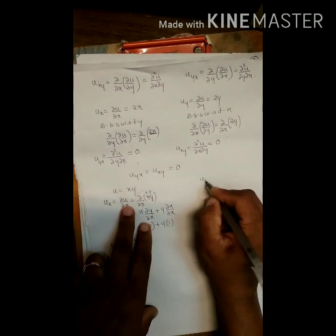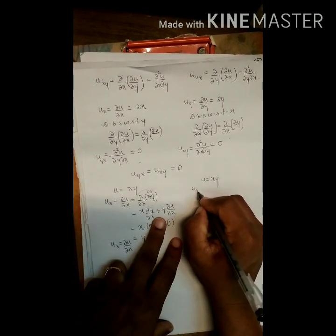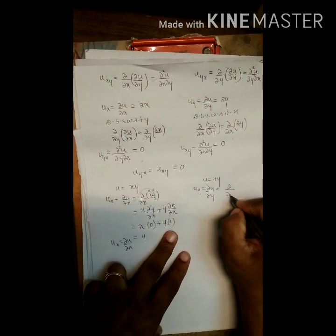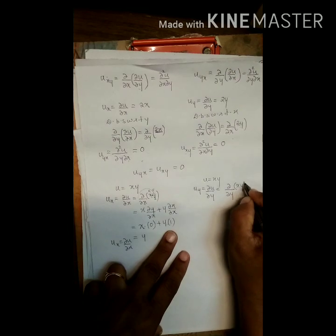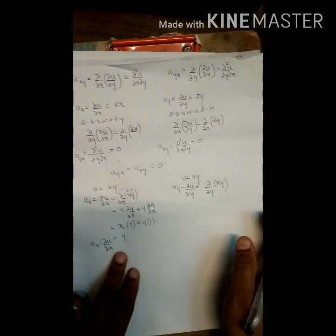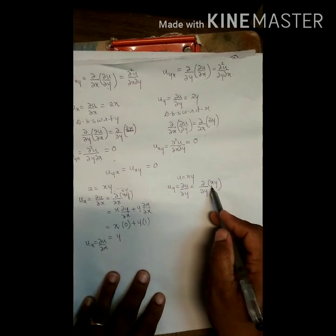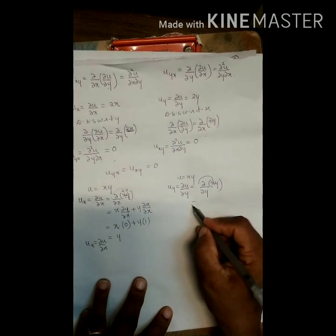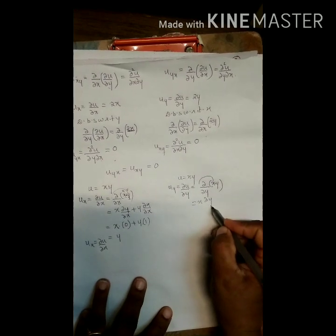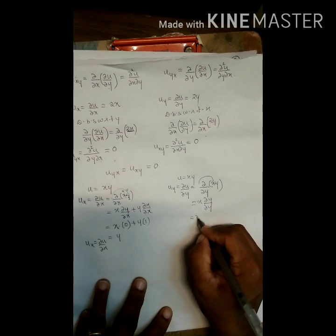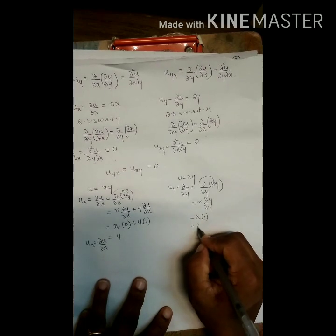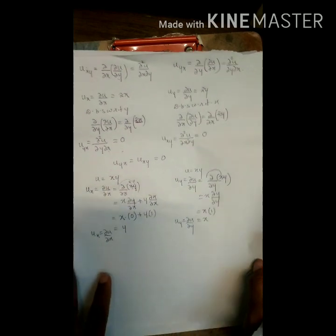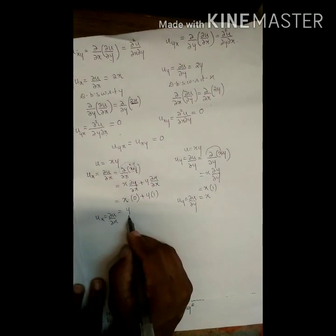Similarly, differentiating u = xy with respect to y: u_y = ∂u/∂y = ∂/∂y of xy. Now differentiating partially with respect to y, x acts as a constant. Bring x outside: x · ∂y/∂y = x·1 = x. So u_y = ∂u/∂y = x.